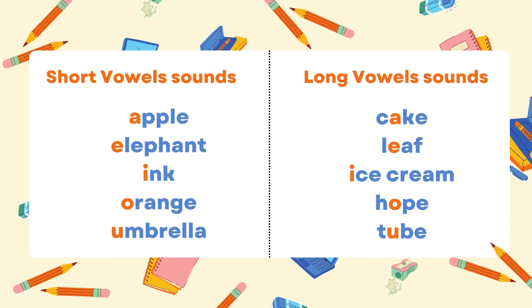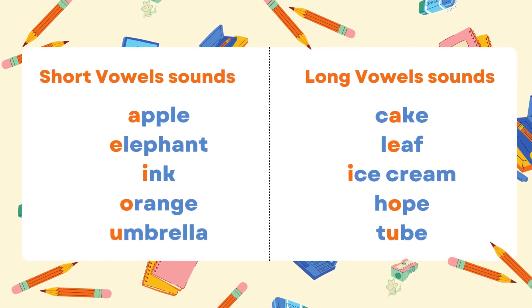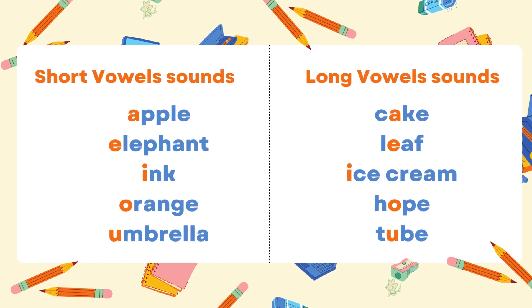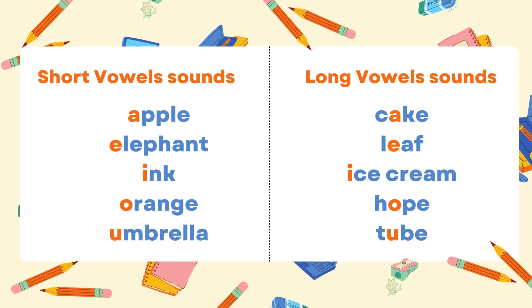Listen carefully to the sounds of the vowels. Short vowel sounds: Apple, Elephant, Ink, Orange, Umbrella.